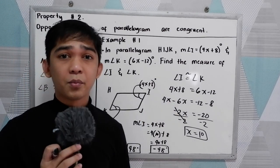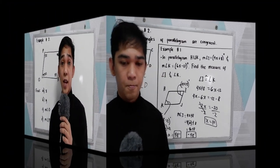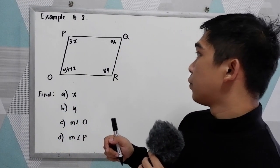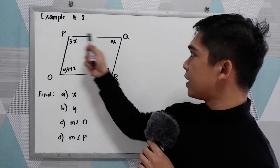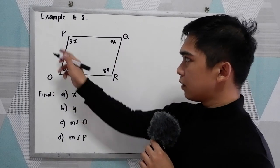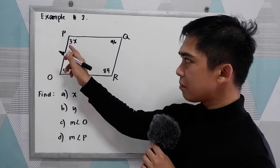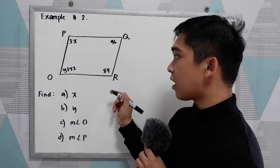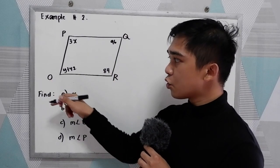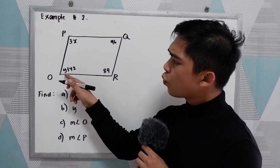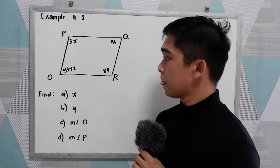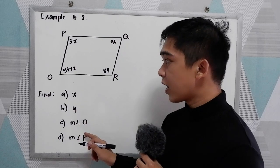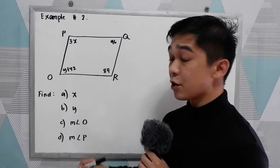Now let's have our example number 2. We have parallelogram O, V, Q, R. Angle P measures 3x. Angle Q measures 96. Angle R measures 84. And angle O measures Y plus 42. We're going to find X, Y, measure of angle O, and measure of angle P.